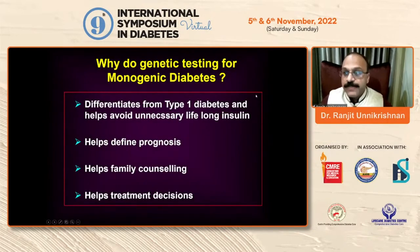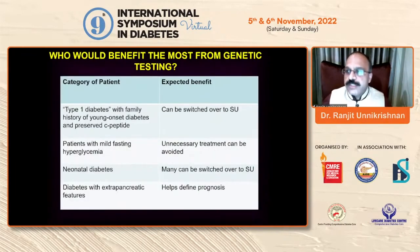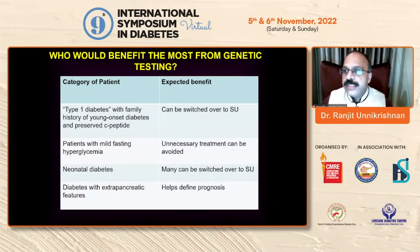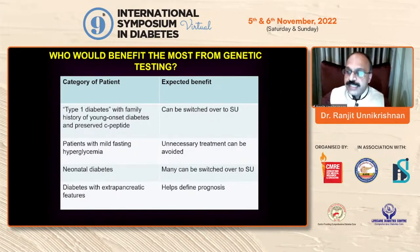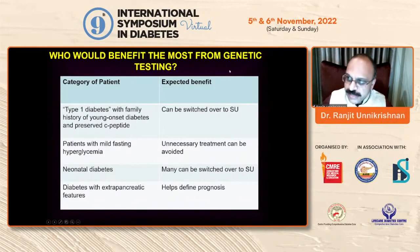Why do genetic testing for monogenic diabetes? Most importantly, differentiation from type 1 — you can avoid lifelong insulin, define prognosis, counsel the family, and guide treatment decisions. Who should be referred? In an ideal world, every young-onset diabetes patient would be tested, but genetic testing is not available or affordable everywhere, so we must select patients. Neonatal diabetes: mandatory — 30–40% yield of actionable mutations. Apparent type 2 diabetes that doesn't look like type 2, with family history and no ketosis: possible HNF monogenic diabetes, may switch to sulfonylurea. Mild fasting hyperglycemia: GCK mutation, can stop treatment. Syndromic diabetes: fourth priority, to explain prognosis.